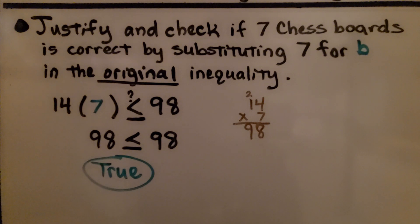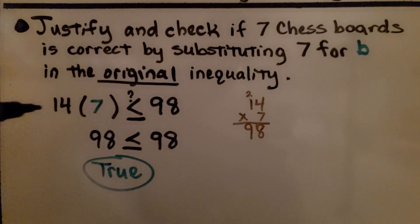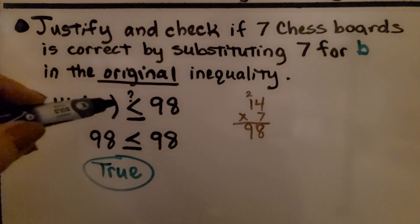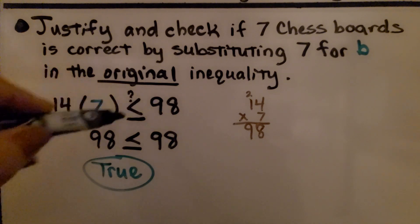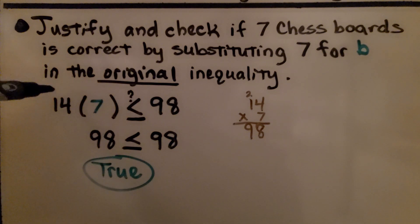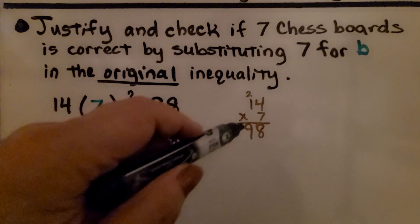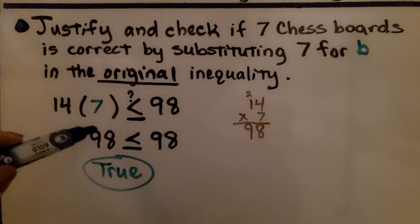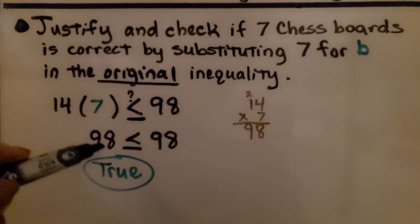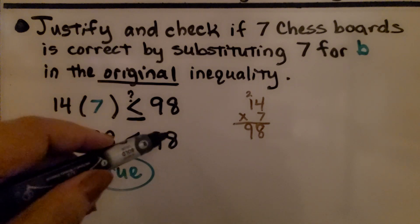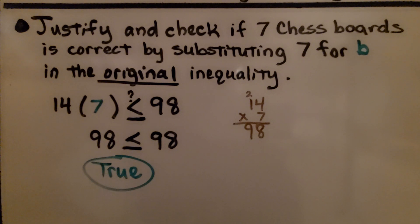We justify and check that 7 chess boards is correct by substituting 7 for b in the original inequality: 14b is less than or equal to 98. Substituting: 14 times 7 is 98, and 98 is equal to 98, so 98 is less than or equal to 98. That's true.